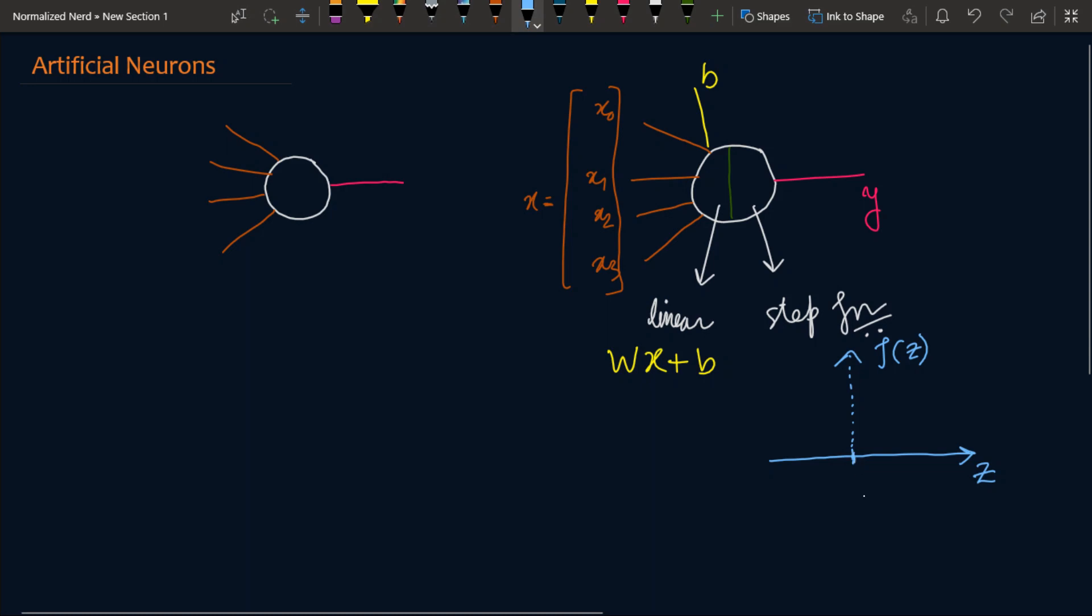Let me call this point something called c. What this step function does is it takes z, and if it is less than c then it produces zero output, and if it is more than or equal to c then it produces a one output. So I can write this function as f(z) equals zero if z less than c, and it is one if z greater than or equal to c.